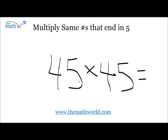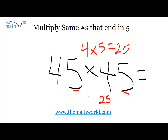We're going to take a look at another example. We have 45 times 45. Again, we have our 5s here, so we're just going to write down 25 in our answer. Now we have our 4, which is our 10th digit, times the next largest number, which is 5. 4 times 5 is 20. So we write 20, and our answer is 2,025.